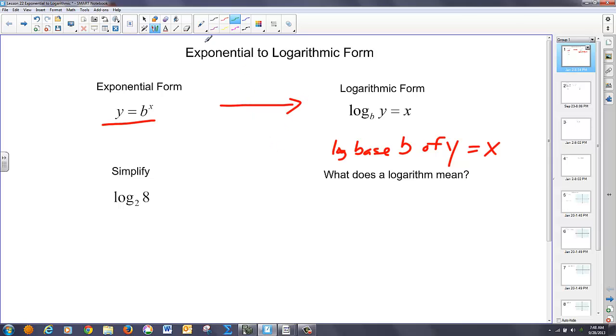And we read this as the log base b of y equals x. So that's how this transitions. The way I look at it is the following: I think if I'm in exponential form and I slide my base over, I slide my base under the y and then add a logarithm, I get my logarithmic form. If I take and want to go back, I slide my base under the x and there's my exponential.